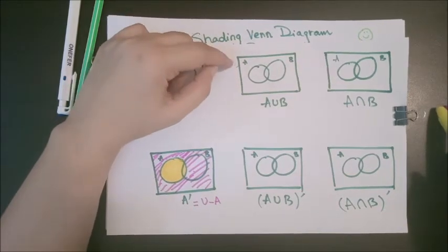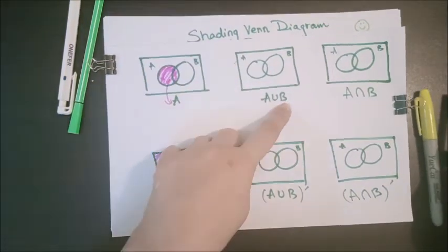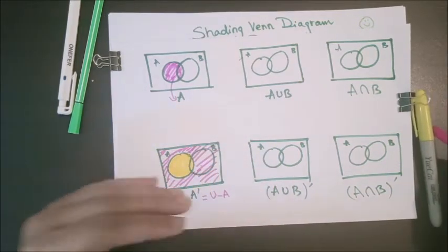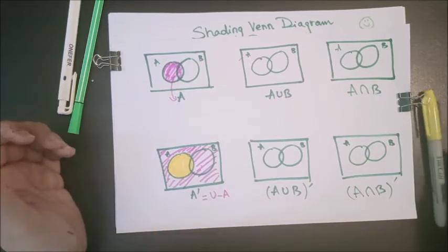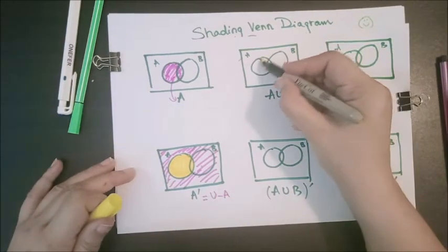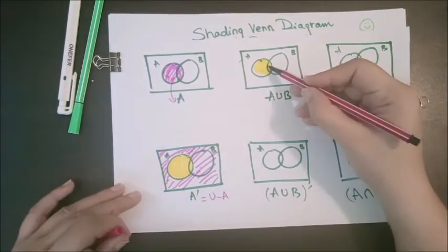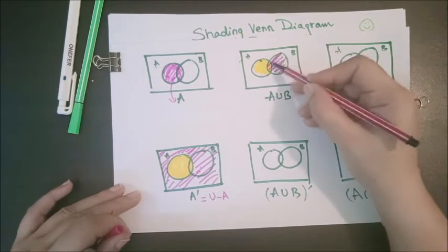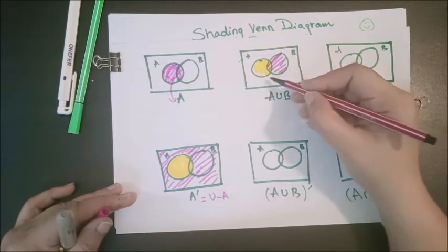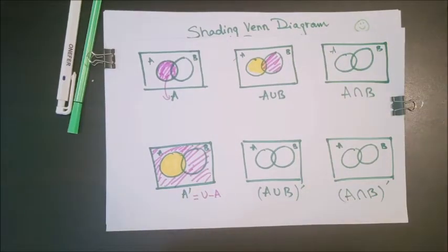Third case: A union B. As I mentioned, union means you have to shade everything present in A and B. Just follow the instruction — whatever is present in A and whatever is present in B, you have to shade both. So the whole pink and yellow area including the center is your A union B — everything I have colored pink or yellow.